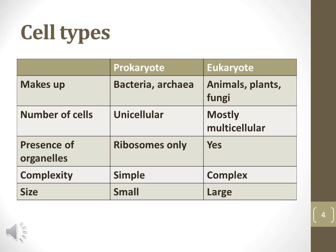This chart explains the major differences between prokaryotic and eukaryotic cells. Prokaryotes include the bacteria and archaea. They are always unicellular and are small, simple cells that do not contain many organelles. Eukaryotes include animals, plants, and fungi, as well as some single-celled organisms. Eukaryotic cells are generally larger and complex with many types of organelles.